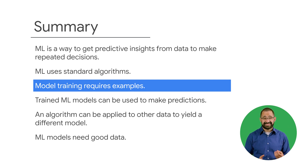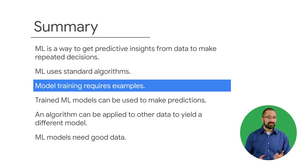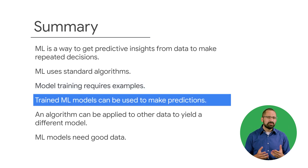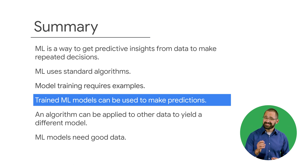ML model training requires examples. An example consists of an input and a correct answer for that input — that's called the label. After you train an ML model, you can use it to predict the label of images it has never seen before.